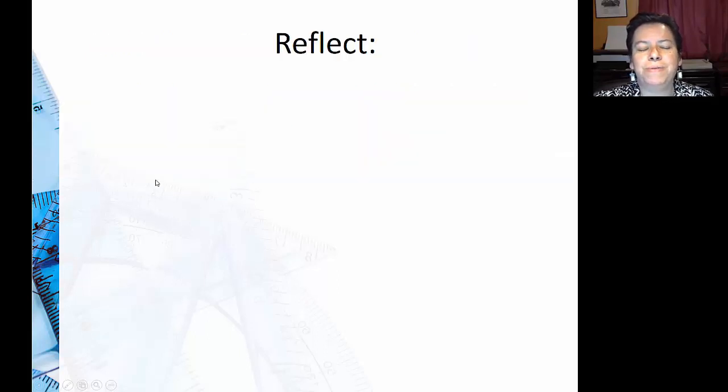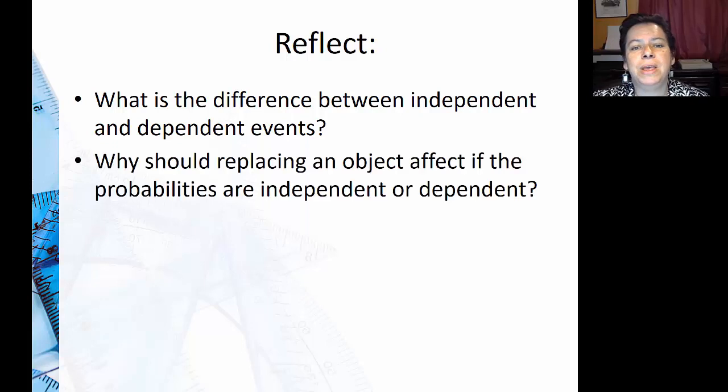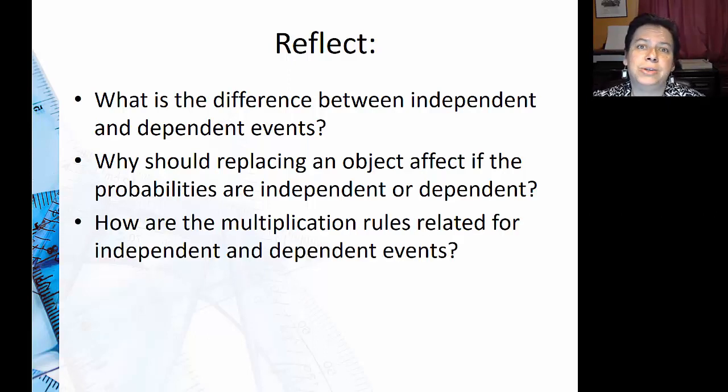For further reflection: What is the difference between independent and dependent events? Why should replacing an object affect whether the probabilities are independent or dependent? And finally, how are the multiplication rules related for independent and dependent events?